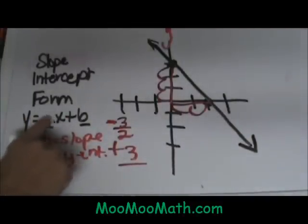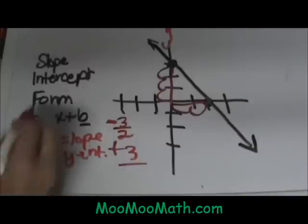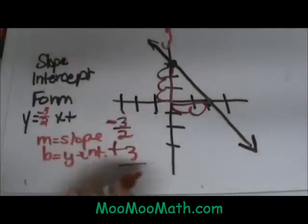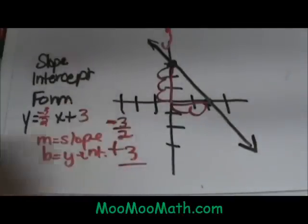So I am going to go back over here and for my slope I am going to plug in negative 3 halves and for my y intercept or b I am going to plug in my positive 3. And there you go. You have your equation from a graph.